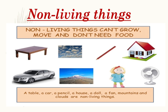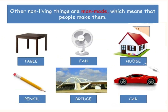Some non-living things are man-made, which means that people make them. What are the things that people make — what we call man-made? An example here is a table, a fan, a house, a pencil, a bridge, and a car. Those things are man-made, made by people, but they are non-living things.